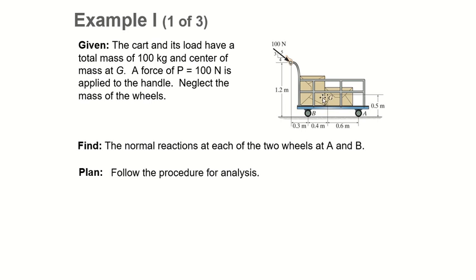Example 1: you have a little cart with an external force of 100 N applied to it. The weight is 100 kg, and the center of mass is at point G. The forces shown include the applied force P. We're going to neglect the mass of the wheels.